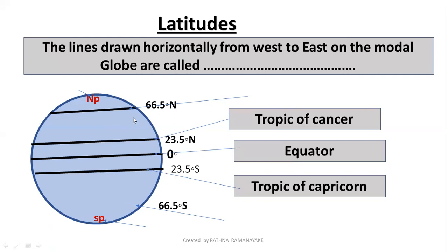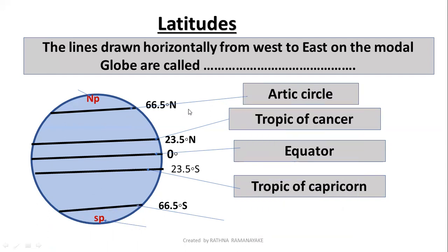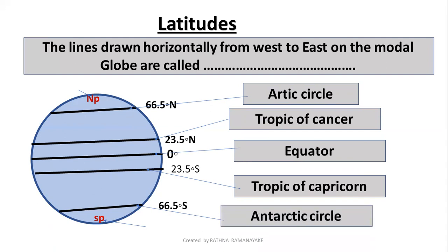North latitude 66.5 degrees is known as the Arctic Circle. And south latitude 66.5 degrees is known as the Antarctic Circle.